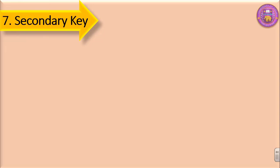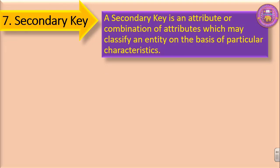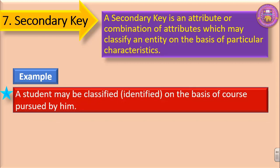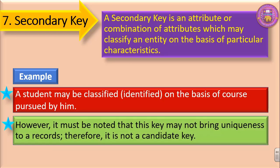The last one is secondary key. A secondary key is an attribute or combination of attributes which may classify an entity on the basis of particular characteristics. For example, a student may be identified on the basis of the course pursued by them. However, it must be noted that this key may not bring uniqueness to a record, therefore it is not a candidate key. All those fields which are not the primary one will be termed as secondary keys.